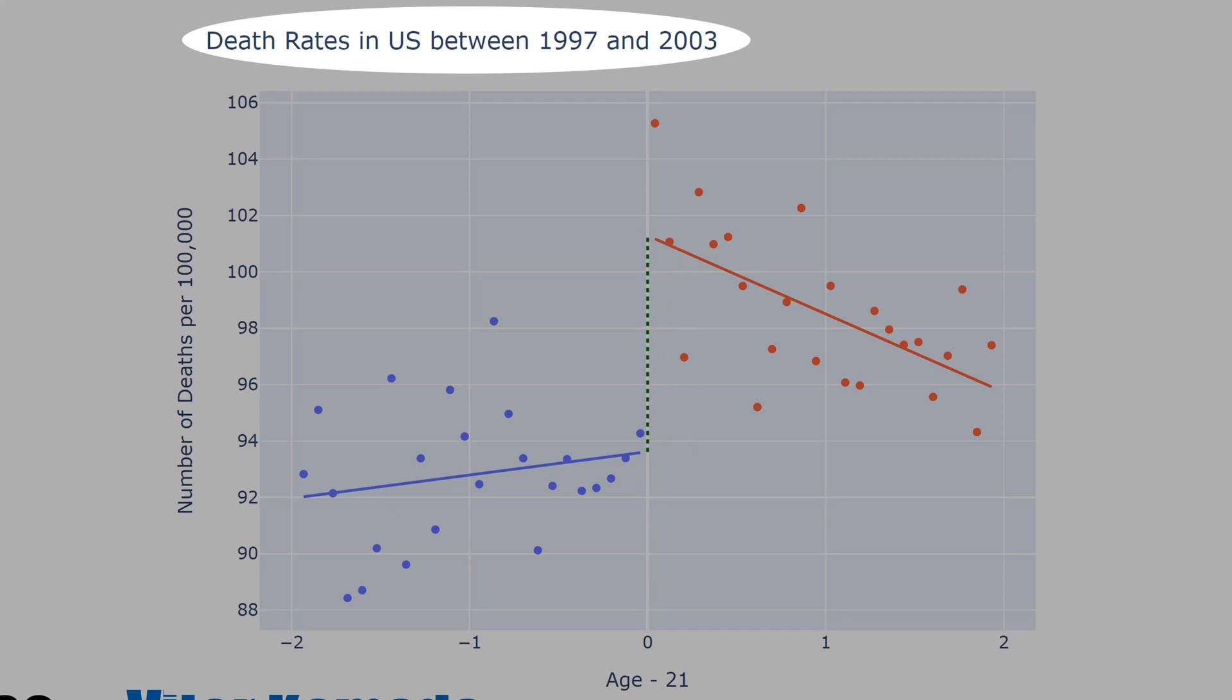This chart shows the death rates in US between 1997 to 2003. The Y here is the number of deaths per 100,000 people, and the X is the age minus 21. We normalize. That means 0 here is 21 years, and the 1 is 22, and the 2 is 23 years.